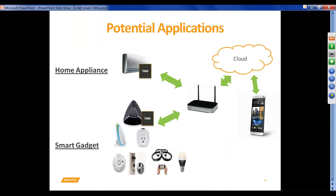Potential applications we are targeting are mainly home appliances and smart gadgets. For home appliances you can control ACs, refrigerators, make smart plugs, drones, smart lighting, air fresheners — any smart home application. Along with that you can target home surveillance use cases. You can also create a Wi-Fi module, using the board in station mode or access point mode, sending data to the cloud and connecting with a mobile app.